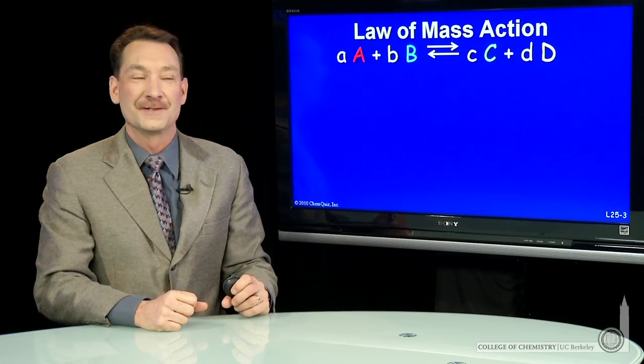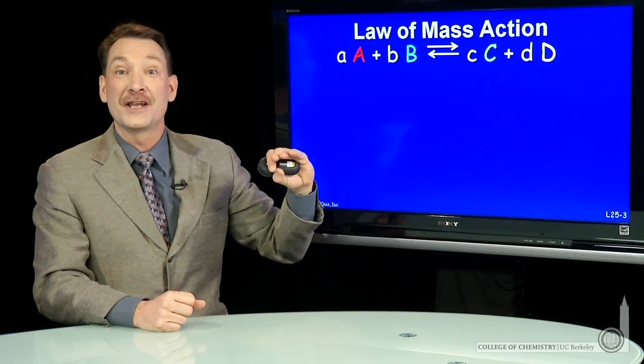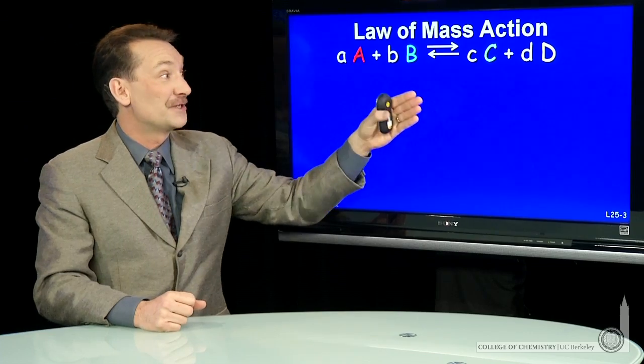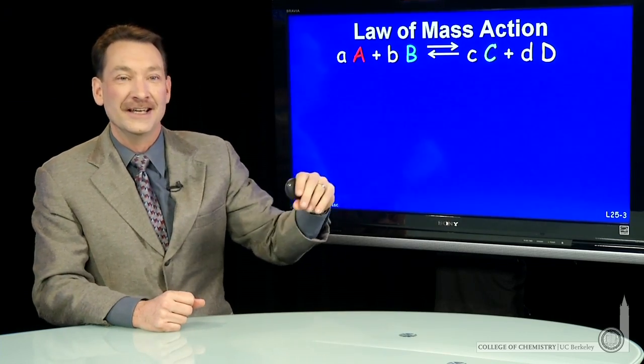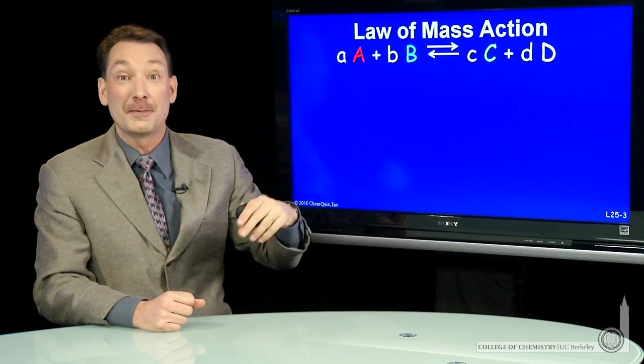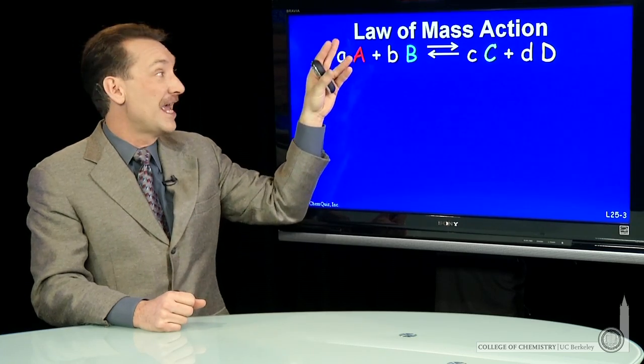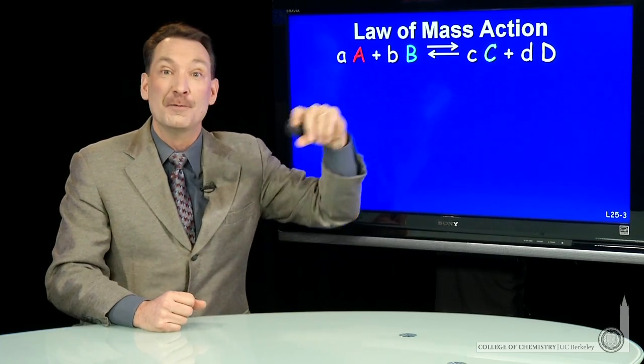Let's look at the course of chemical reactions. Here I have a chemical reaction that I've written generically, just A plus B goes to C plus D. And I've used the small letters a, b, c, d to represent the stoichiometric coefficients, a moles of A and c moles of C.